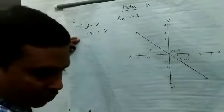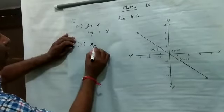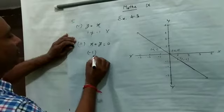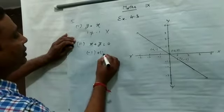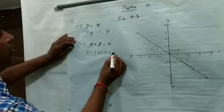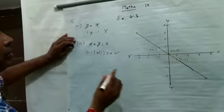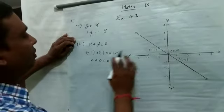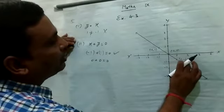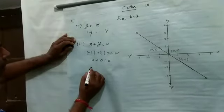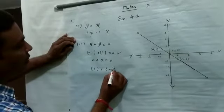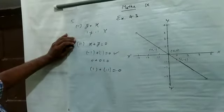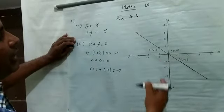Second check करेंगे: x plus y is equal to 0. x की value है minus 1, plus y की value है 1. minus 1 plus 1 is equal to 0 — यह satisfy करता है. x is equal to 0, y is equal to 0 put करेंगे तो 0 — यह भी है. और x is equal to 1, y is equal to minus 1: 1 plus minus 1 is equal to 0 — यह भी है. यह तीनों point x plus y is equal to 0 को satisfy कर रहे हैं, इसलिए x plus y is equal to 0 इसका equation होगा.